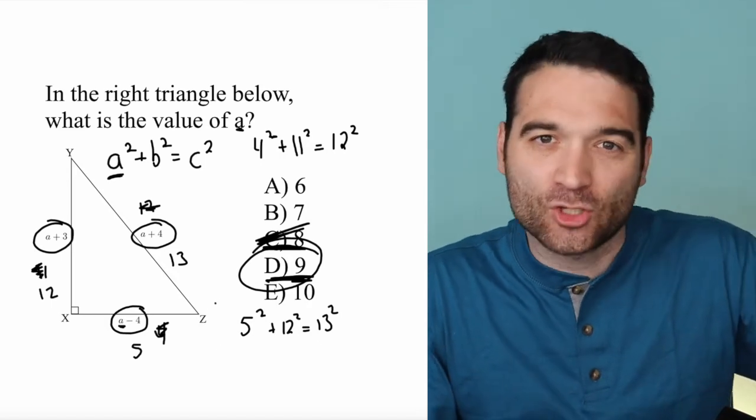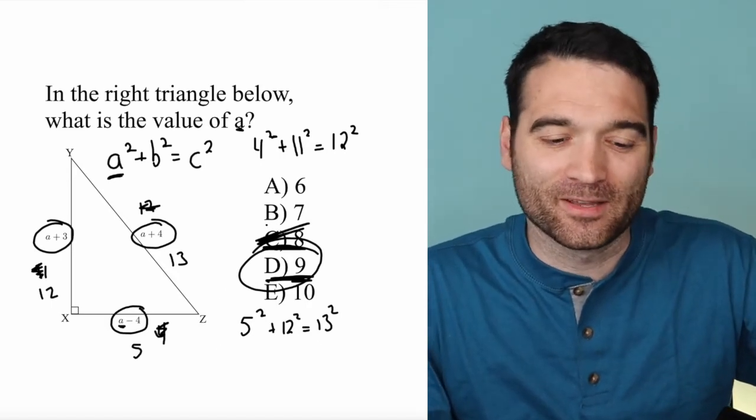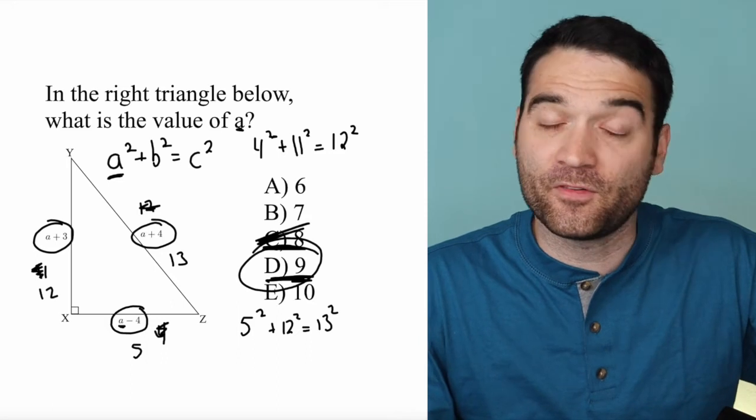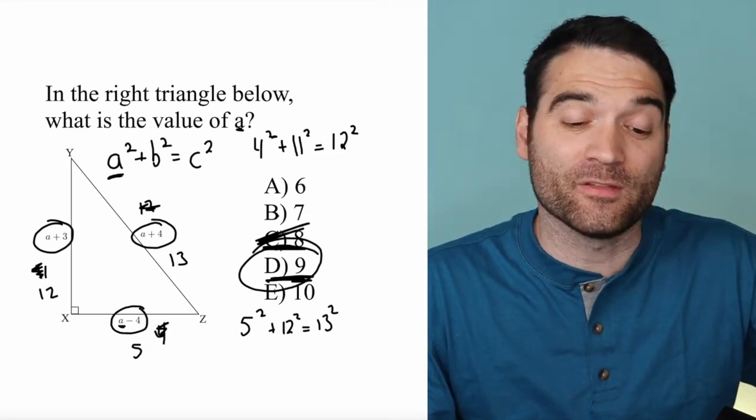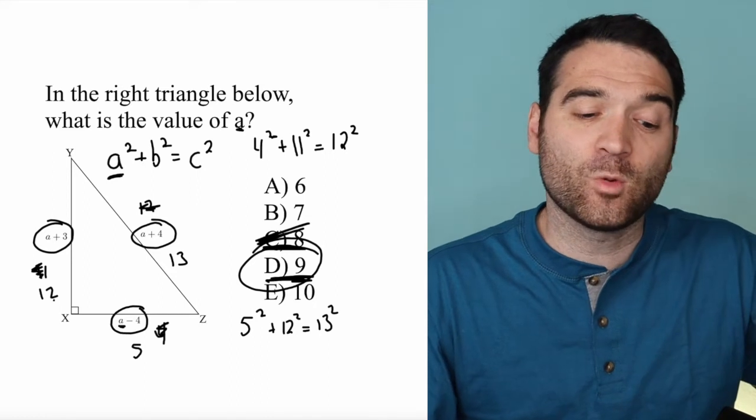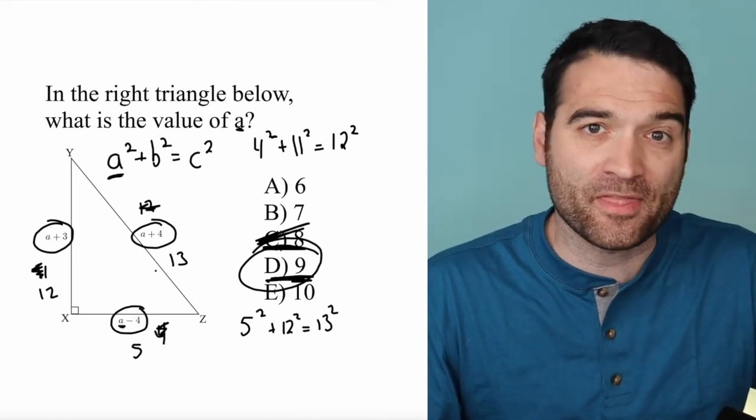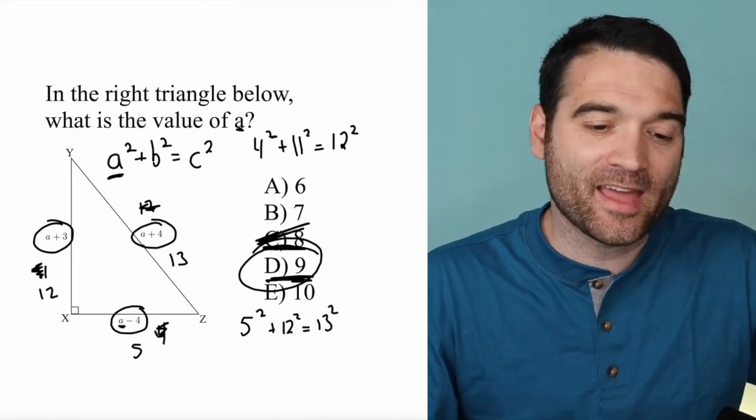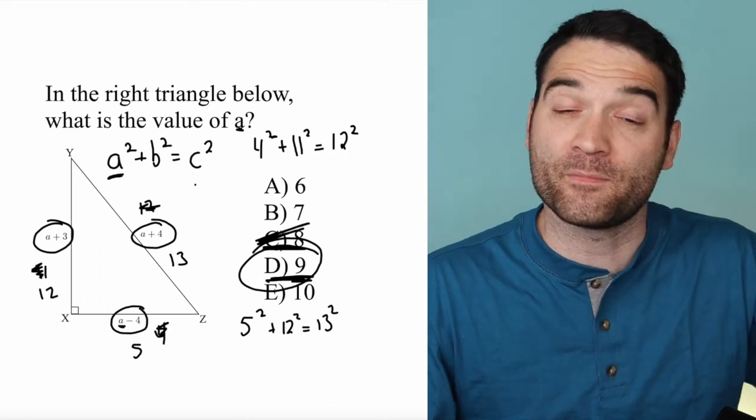You might think I cheated a little bit starting at the middle and going to the next one. Fair enough, but it is a good idea to start in the middle. Here's what I'll say though: 5, 12, 13 is what's known as a Pythagorean triple—a set of three numbers that work in the Pythagorean theorem.